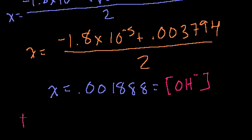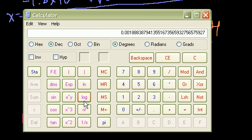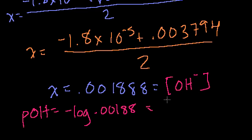Now if I want to figure out my pOH. I just take the minus log of this number. Which is equal to. So let's just take the log of it. The log is that. And then I take the minus of that. So it's 2.72. So it's 2.72.